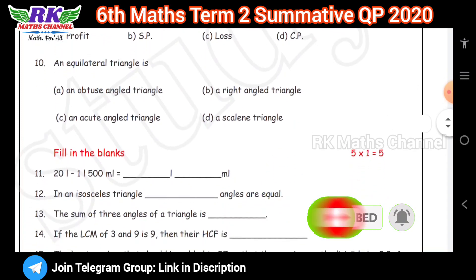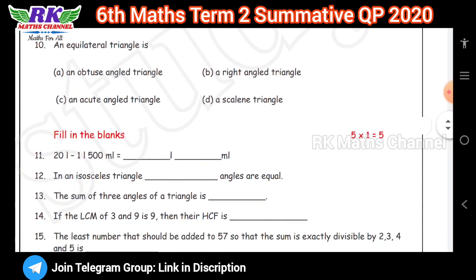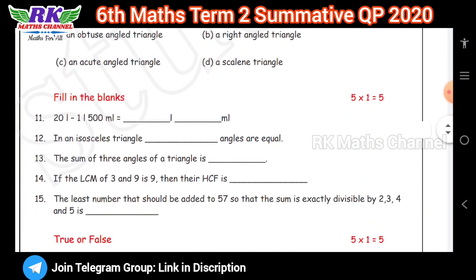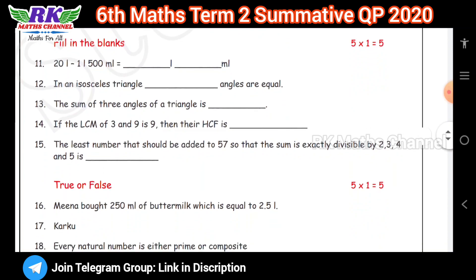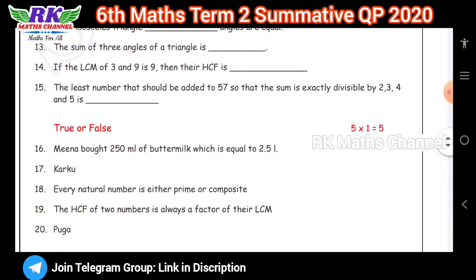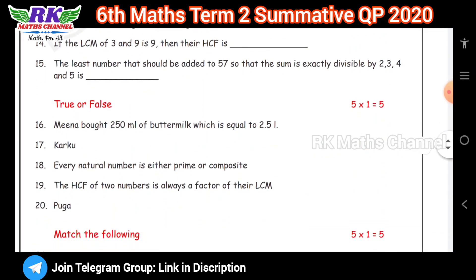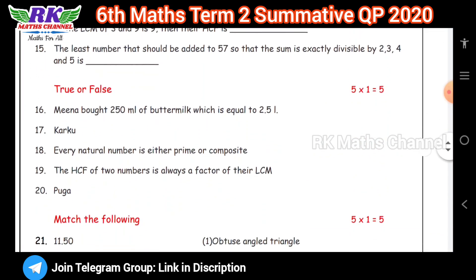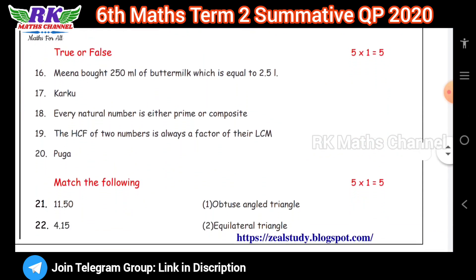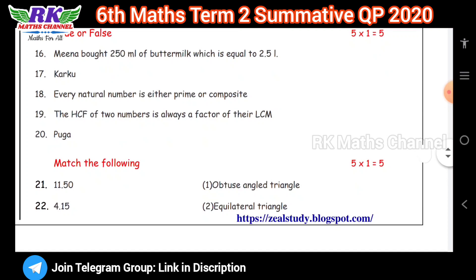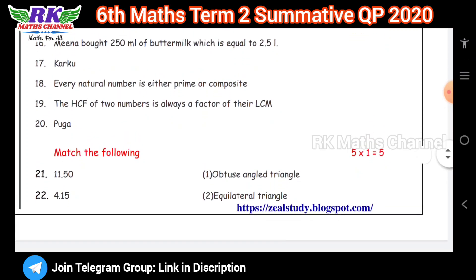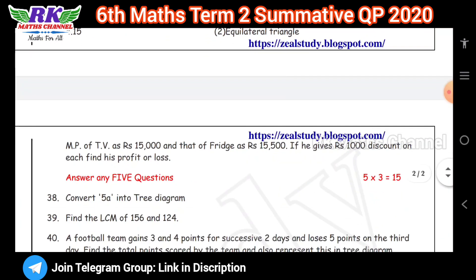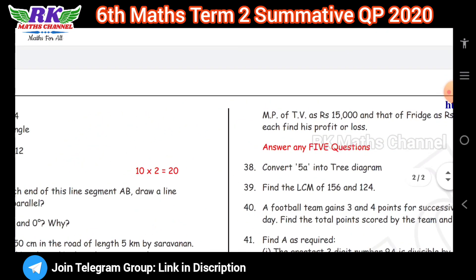First, 10 bits. You can fill in the blanks — fill in 5, so total is 20 marks. Match the following in 5 — that's 25 marks. So bits of the same is 25 marks.